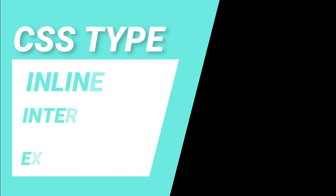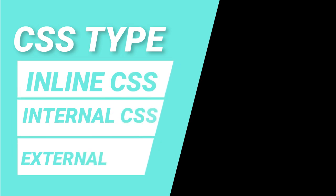A lot of my subscribers want to know about CSS types — what they are called and how we can apply them. I got some questions from subscribers who don't know what these are. So, CSS basically has three types: inline CSS, internal CSS, and external CSS. In this video, we will apply all three types of CSS.